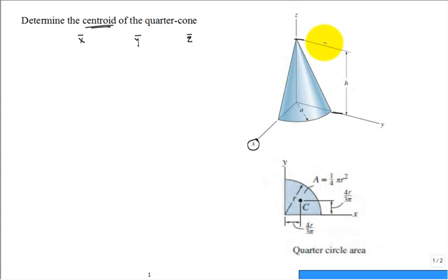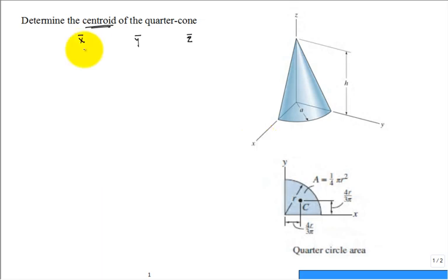I encourage you to develop this insight — ask yourself what you expect the answer to be, so if you get off track you can catch your own error. Also look for symmetry: two of these answers should have the same numeric value. Which two? x̄ and ȳ — they should be the same by symmetry.